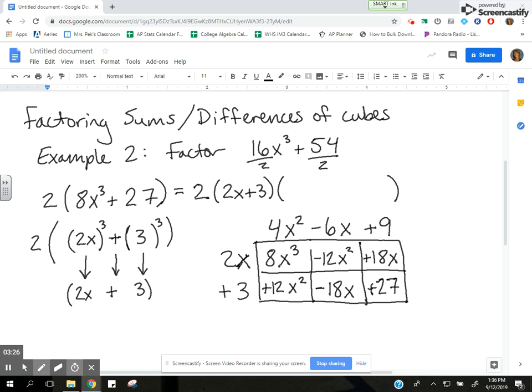So my factors of 8x³ + 27 is (2x + 3)(4x² - 6x + 9). And of course, we had that 2 on the outside from the very beginning when we factored out that greatest common factor.